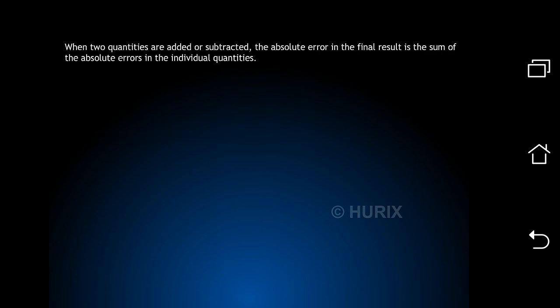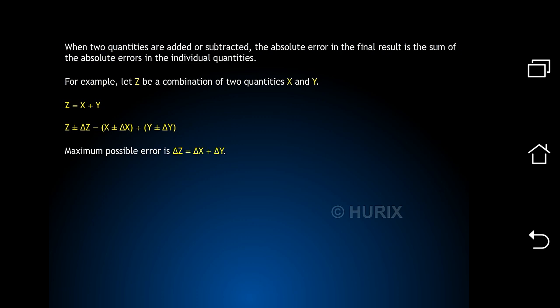Combination of errors. When two quantities are added or subtracted, the absolute error in the final result is the sum of the absolute errors in the individual quantities. For example, let z be a combination of two quantities, x and y. z equals x plus y. z plus or minus delta z equals x plus or minus delta x plus y plus or minus delta y. Maximum possible error is delta z equals delta x plus delta y.